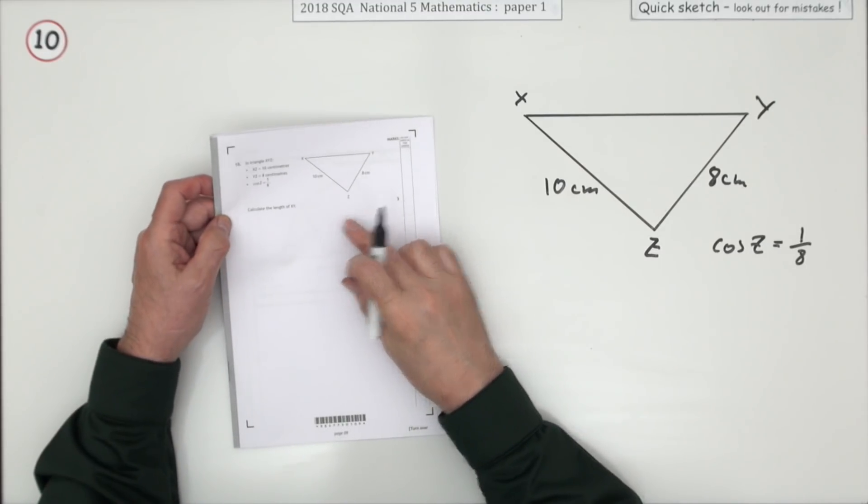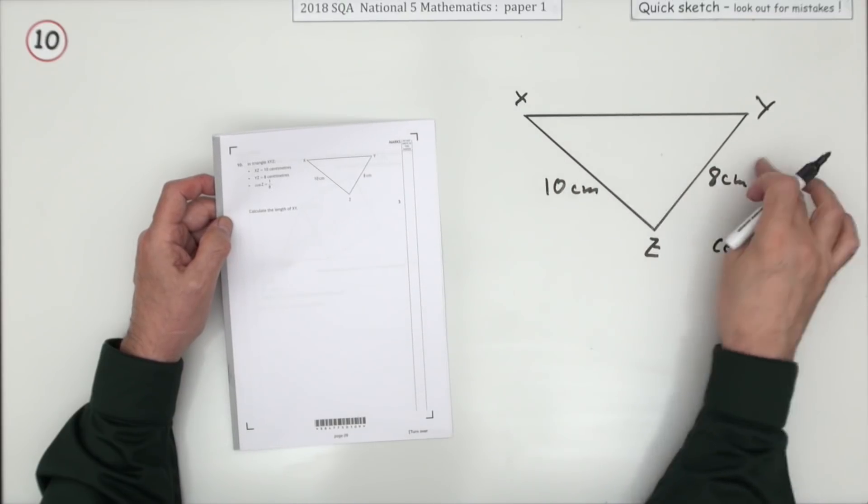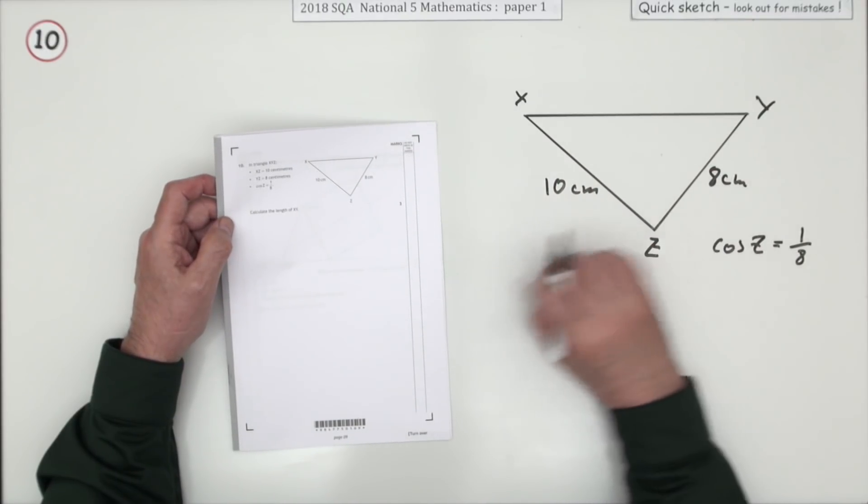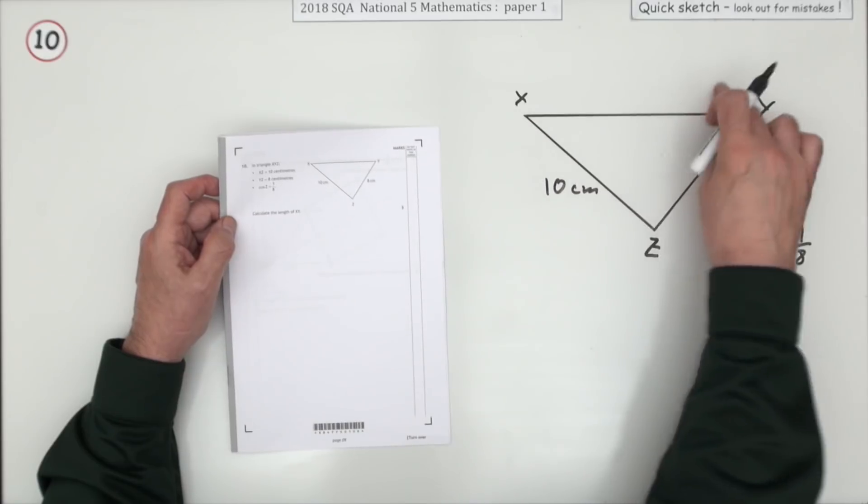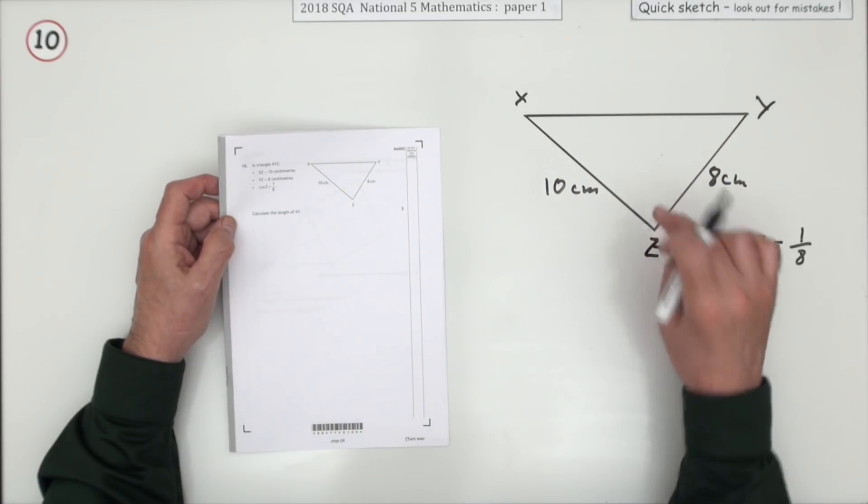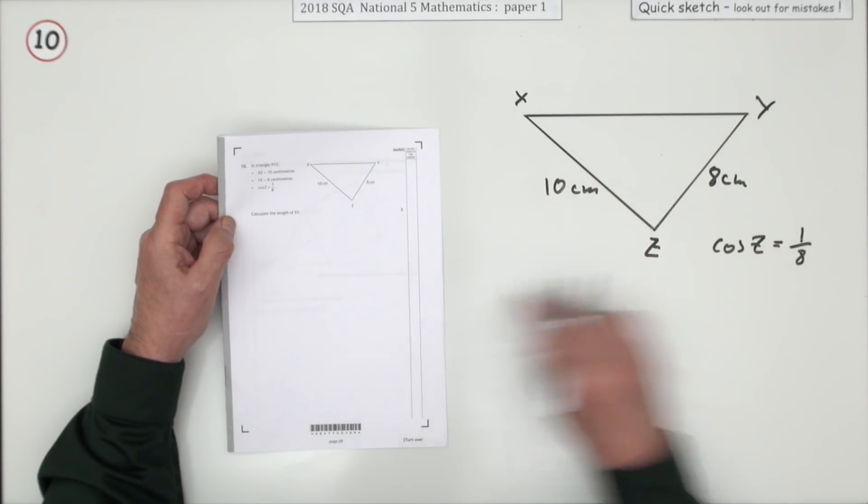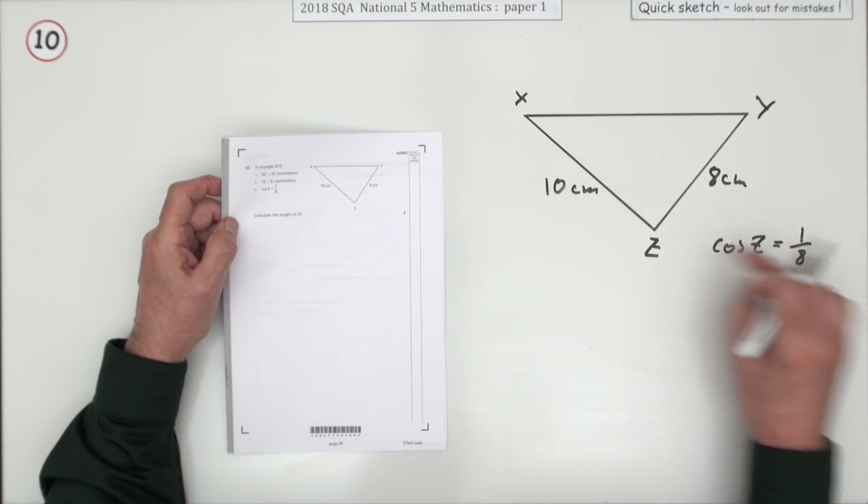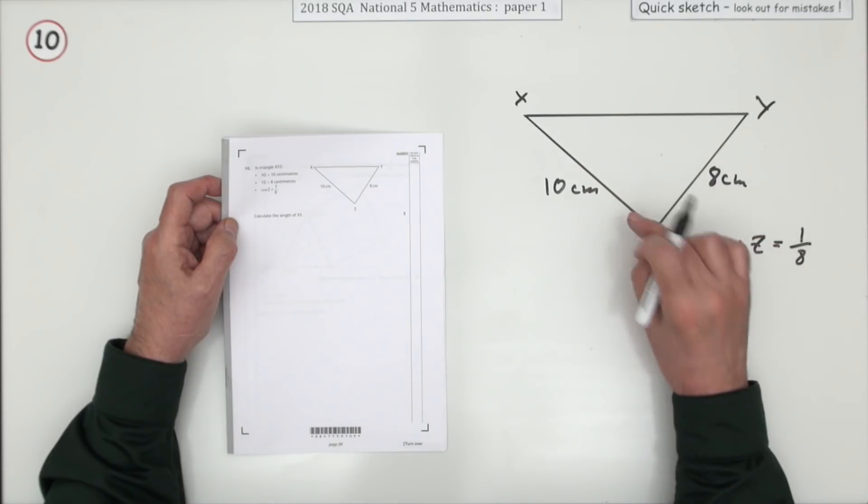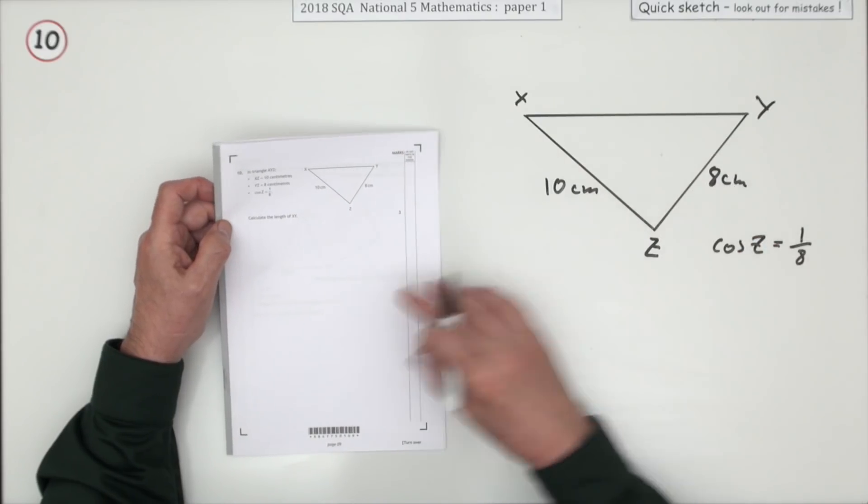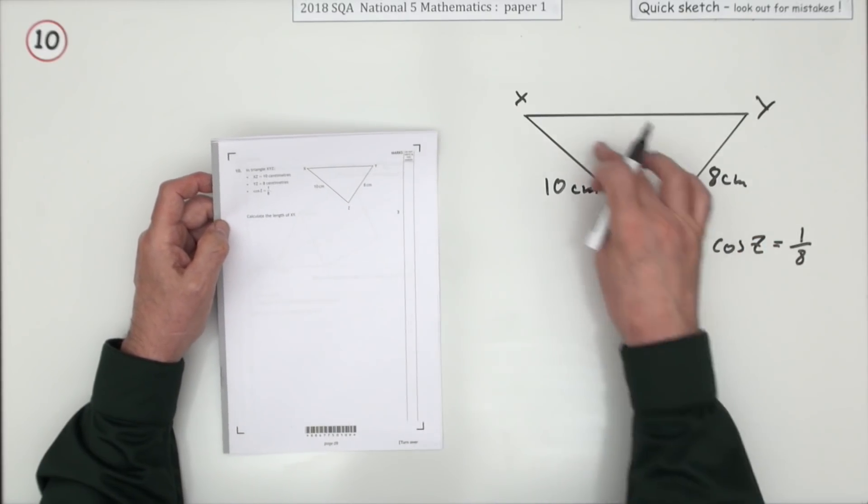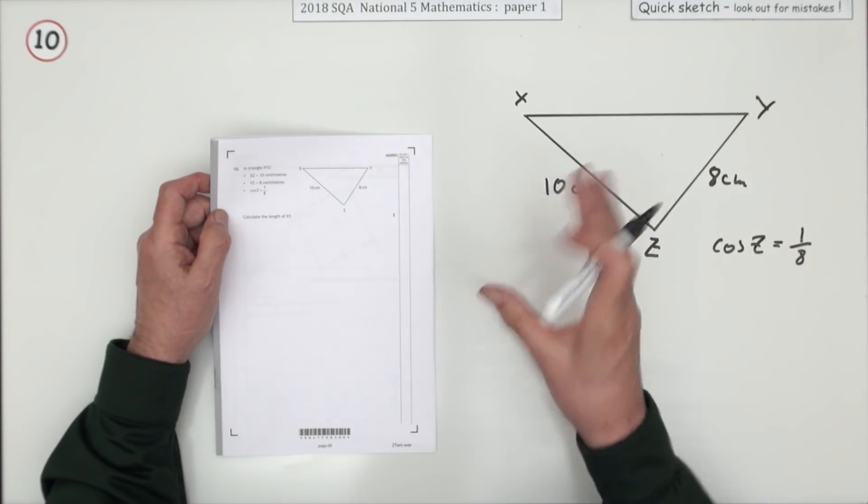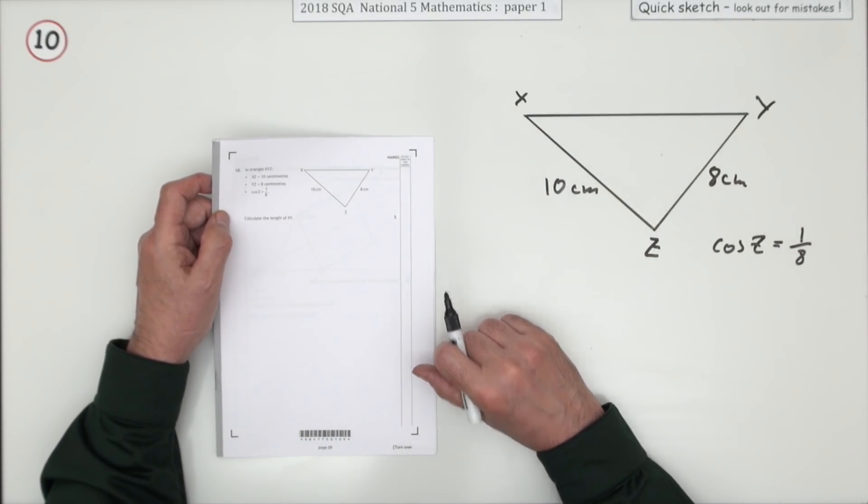Number ten. You're given this triangle, the length of two sides. Don't assume it's a right angle triangle and just think, 'I'll get this side from Pythagoras.' Unless you're told that's 90, you can't use 90. In any case, it tells you the cosine of that angle is one-eighth. If that was 90 degrees, the cos of 90 is zero, so it's not right angled. This is going to be one where you're using the cosine rule.